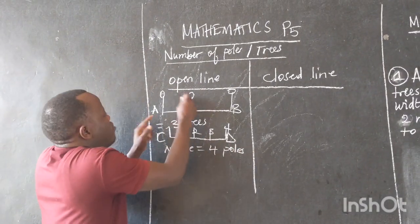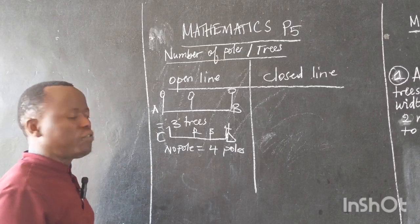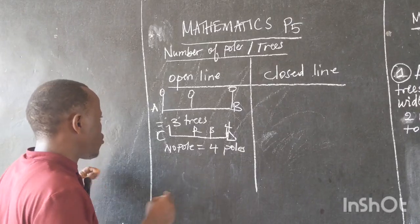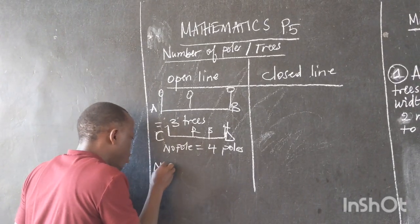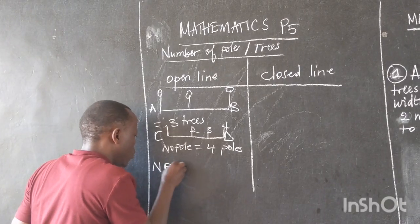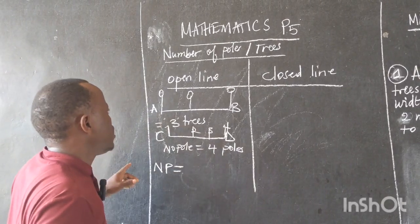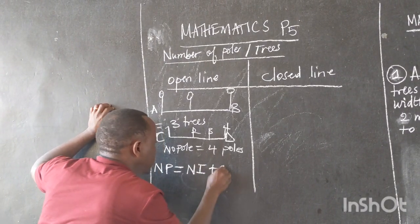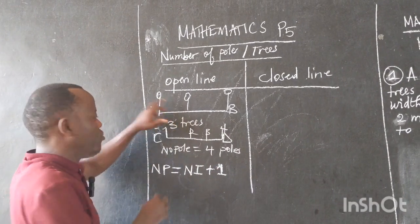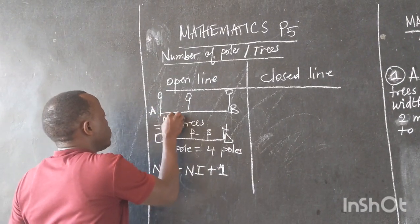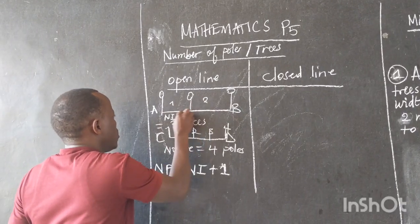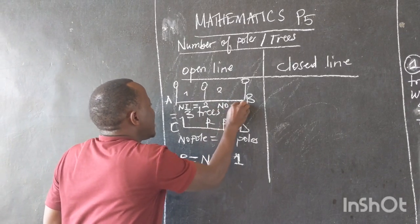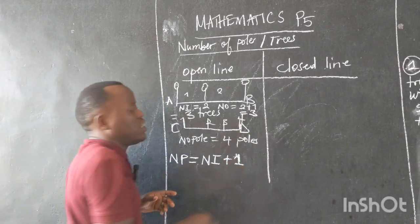How do we find the number of trees, or how do we find the number of poles on an open line? The number of poles on an open line is equal to the number of intervals plus one. The number of intervals here is equal to two. If we are finding the number of objects, we take two plus one and we get three.